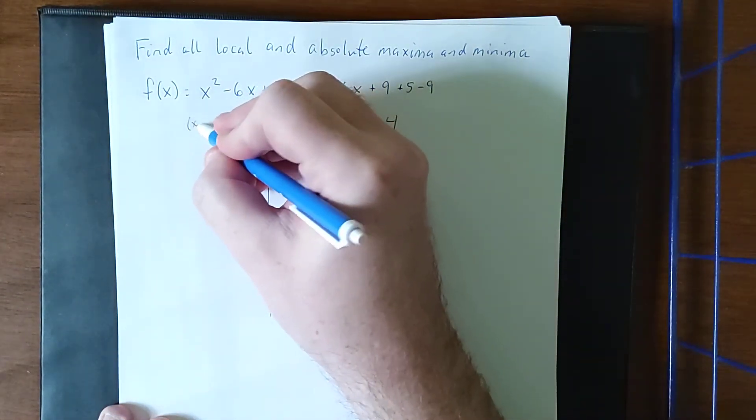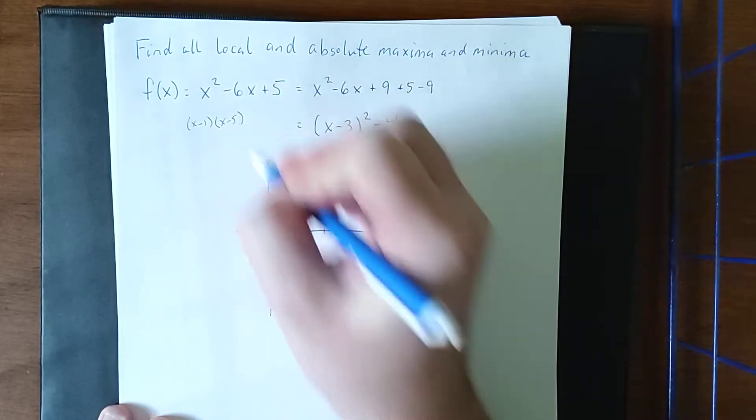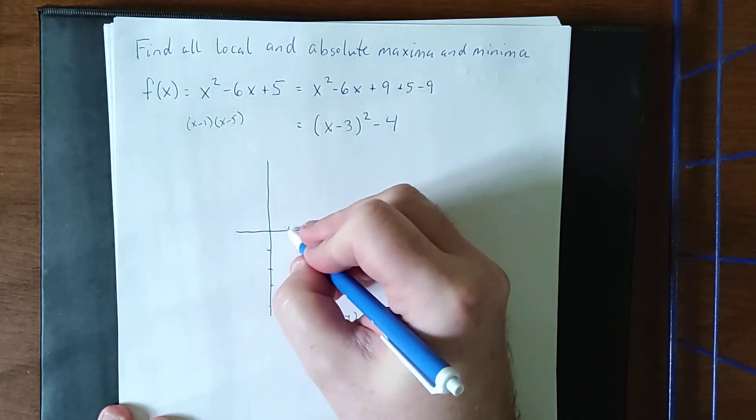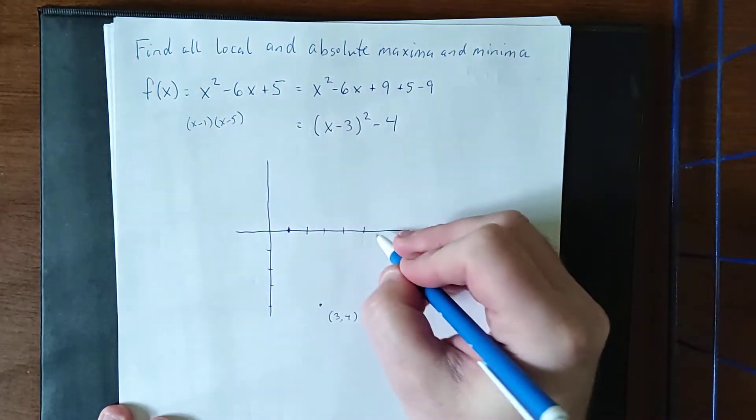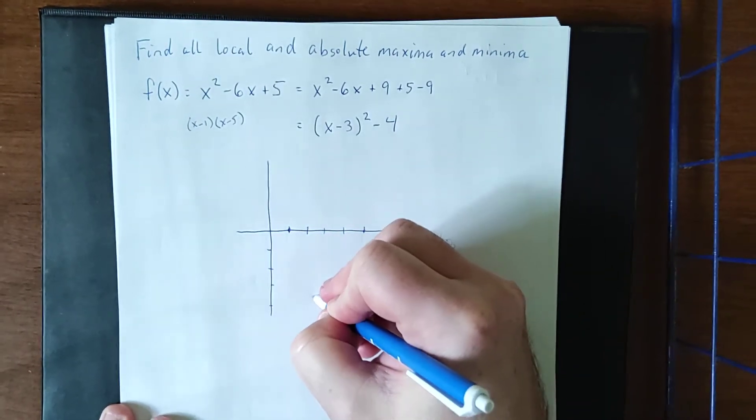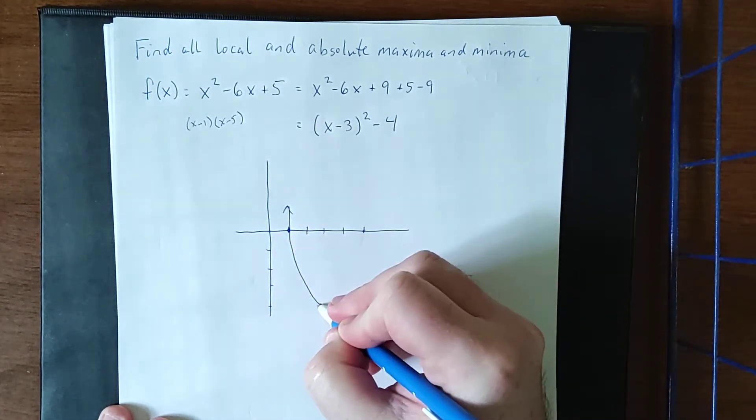Also, if we had factored the original quadratic, we would have had (x - 1)(x - 5), letting me know that it'll have x-intercepts at (1, 0) and (5, 0). Drawing the parabola that passes through these points.